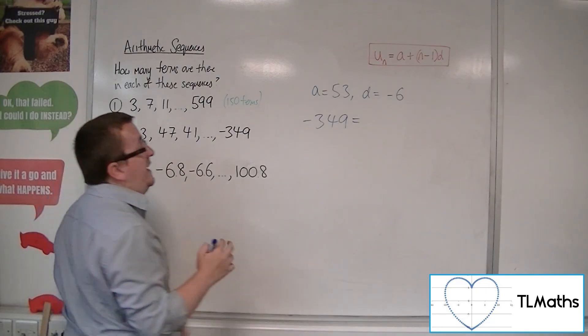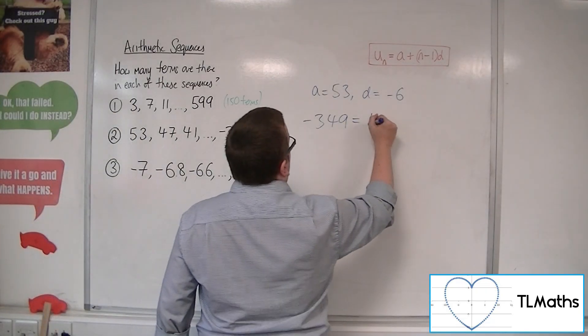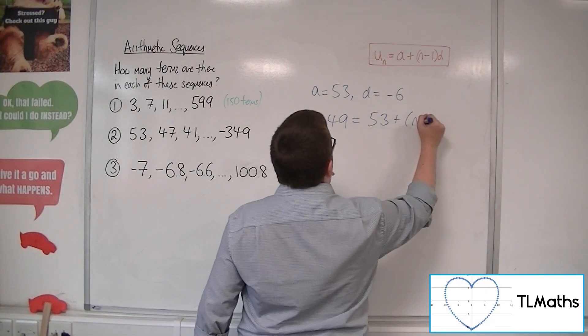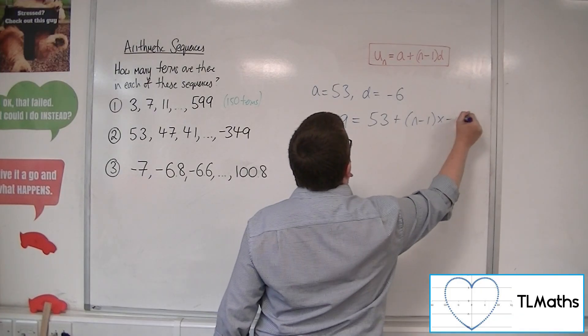I want to find out what value of n gives me that. So a is 53, n minus 1, I don't know the n, and the d is the minus 6.